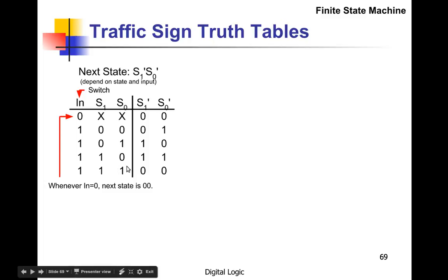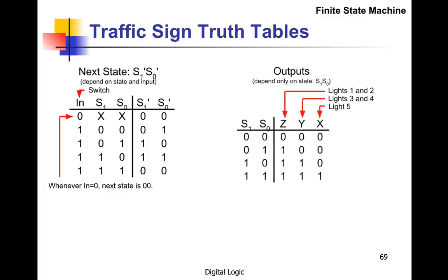The other thing we need to do is figure out what the outputs are. So let's let Z be lights one and two, let's let Y be lights three and four, and let's let light five be X. So when do we want these things on?